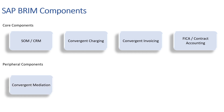Apart from these four major components, we have some peripheral components as well. Convergent Mediation, short form SAP CM, is also a Java-based application and is mainly responsible for data acquisition, data enrichment, data sequencing, data sorting, and data coordination.